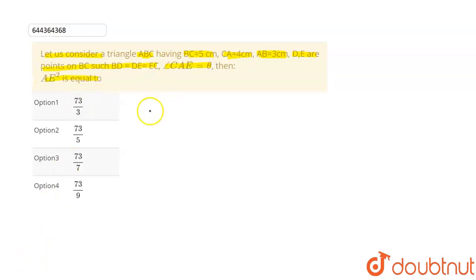So here in triangle ABC the side given as AB is equal to 3 cm and BC is equal to 5 cm and CA is equal to 4 cm. On observing we can see that BC whole square is equal to AB whole square plus CA whole square.